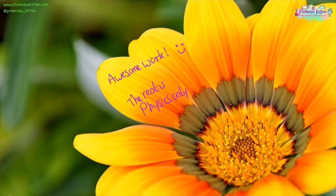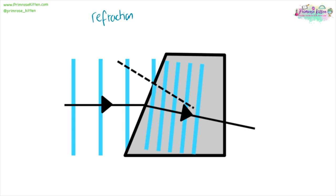Awesome work for making it to the end — the rest of this is physics only. Refraction happens when a wave passes from one medium into another, such as from air into glass or air into water, and it will change direction. The reason it changes direction is because the wave changes speed, but different parts of the wave change speed at different points — the part that hits first changes speed before the part that hasn't changed medium yet.